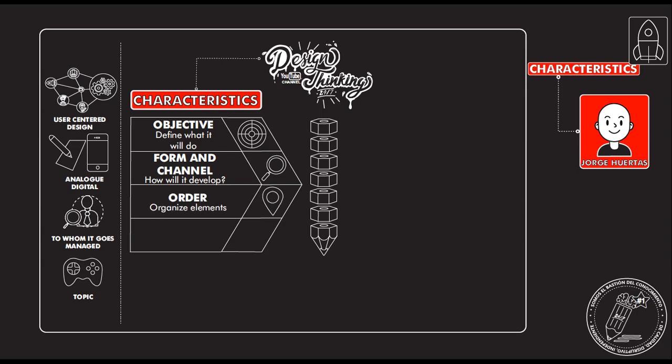Then I start organizing the different components: pictures, pictograms, text. And of course there are different ways where I can use them. For example, a golden ratio — it's something really helpful for all the distribution. Then I start making the planning, which means the layout structure. I need to be very clear where I'm going to put everything, and of course keeping in mind all the design characteristics.